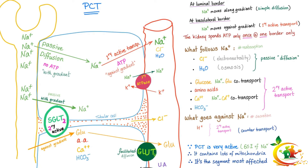What follows sodium: chloride follows by electroneutrality — sodium is positive, chloride is negative. Water follows sodium by osmosis, called obligated water. Glucose follows sodium through the sodium-glucose co-transporter, which is secondary active transport. Amino acids, calcium, and bicarbonate also follow via secondary active transport. What goes against sodium is hydrogen.